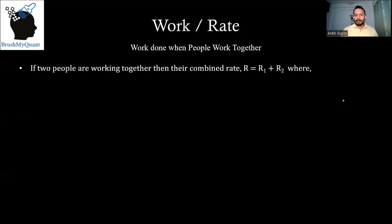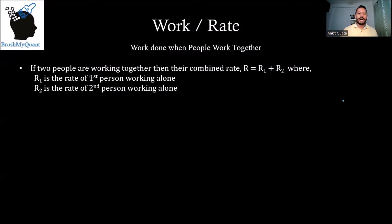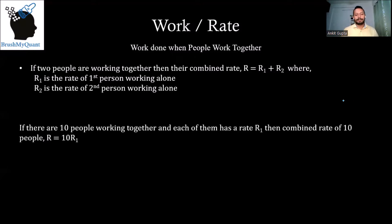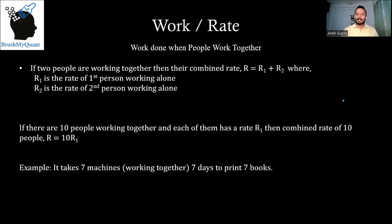When two people work together, their combined rate becomes the sum of their individual rates. If r1 is the rate of the first person and r2 is the rate of the second, the combined rate is r1 + r2. For 10 people each with rate r1, the combined rate is 10 × r1. For example, seven machines working together have a combined rate of 7r.